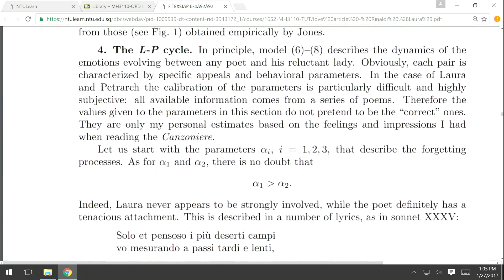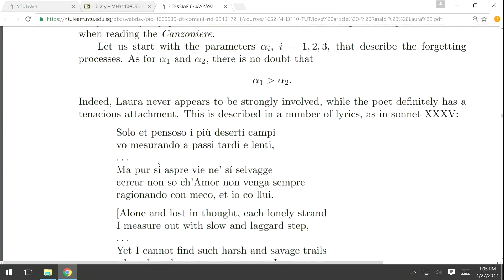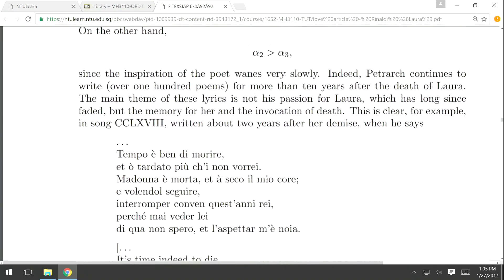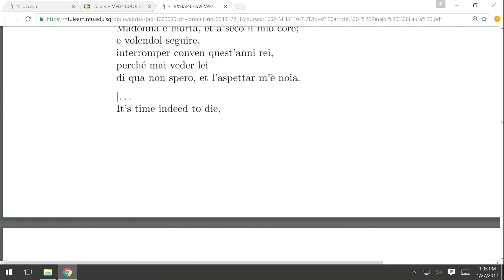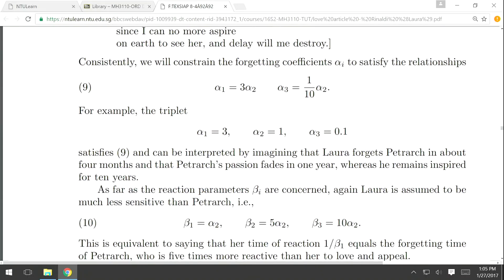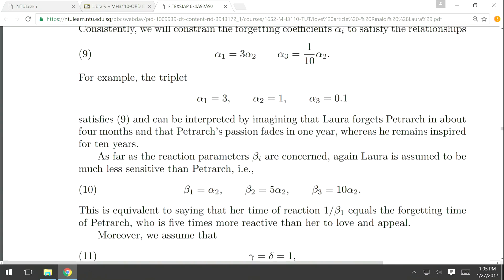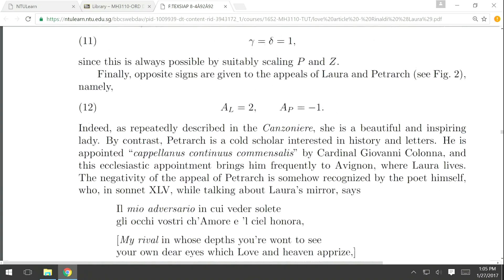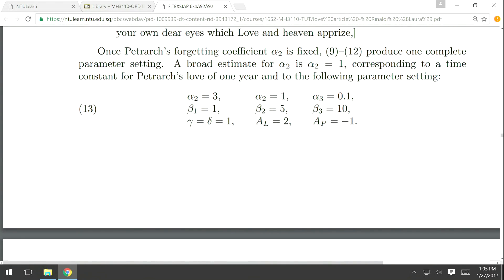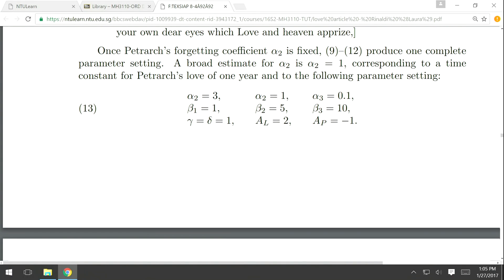After this, Rinaldi speculates about how to find the values of the parameters. Finally, he is able to calculate the values of the parameters. There are nine parameters, and these values are more or less taken out of nothing—there is some justification but no mathematical foundation.